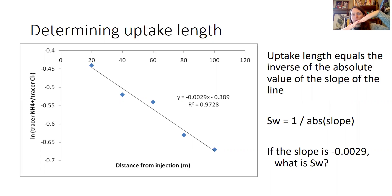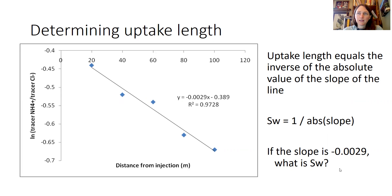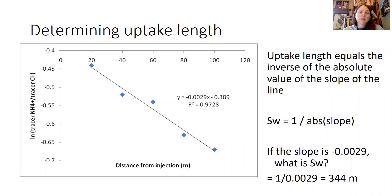In this case, the slope would be negative 0.0029 based on the equation of the line. Since SW is the inverse of the absolute value of the slope, the answer should be 344 meters. So that would be the uptake length for this particular ammonium molecule.